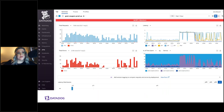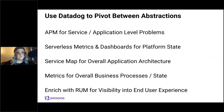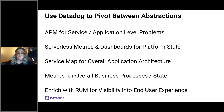Going back to APM: the service page for a serverless function looks just like the APM page for any other service, regardless of the underlying platform. You can see how it's performing and behaving on a service level. You want to pivot between abstraction layers: use APM for service and application level problems — to check whether the service is giving back the intended responses, whether latency is too high, or whether your JSON is formatted correctly. Use serverless metrics and dashboards to see the state of your platform.